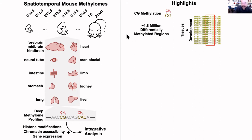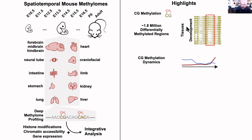The project was headed in my lab by Yupeng He. Yupeng found nearly two million differentially methylated regions, either by comparison of DNA methylation profiles between tissues or within a tissue over developmental time. Remarkable dynamics were observed from E10.5 to adult with both programmed losses and dramatic gains after birth of DNA methylation at what we presume are developmentally regulated enhancers.